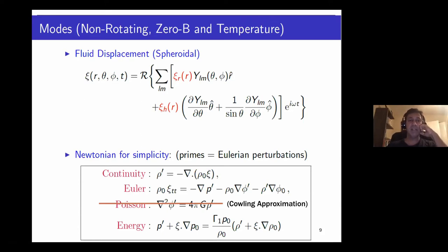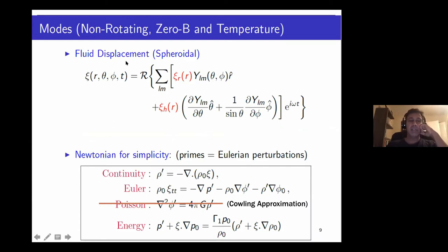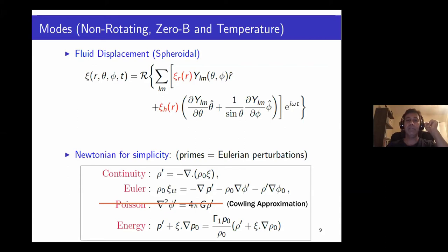One can write down the fluid displacement as a vector with a radial component and an angular component — amplitudes ψ_r and ψ_h — decomposed in terms of unit vectors r, θ, φ. These are spheroidal modes. Kip Thorne showed that in the zero-rotation limit one has a decomposition in terms of parity: even-parity oscillations are called spheroidal, odd-parity are toroidal.